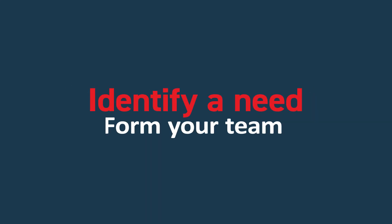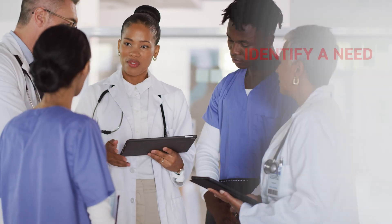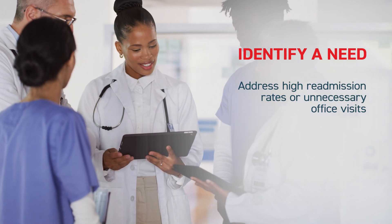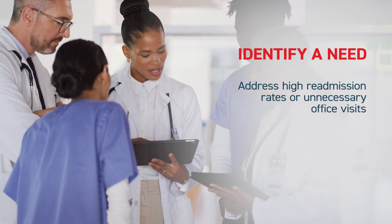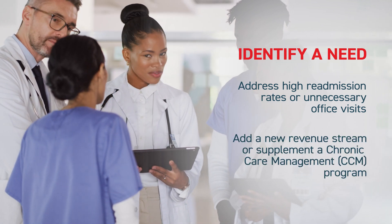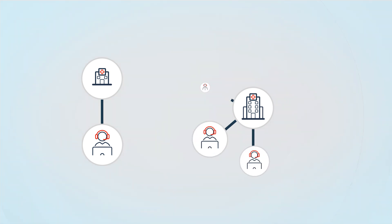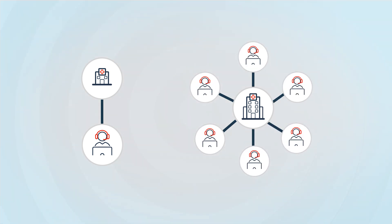Now let's discuss how to get your own RPM program off the ground. The first step is to identify a need and form your team. The need can address a current issue you're experiencing, such as high readmission rates or unnecessary office visits, or it can enhance an opportunity such as adding a new revenue stream or supplementing a chronic care management program. The size of your team will depend on your organization's needs — a small private practice may have one dedicated resource, while a larger operation might have a whole team of clinicians and administrators.